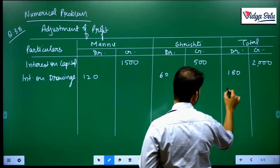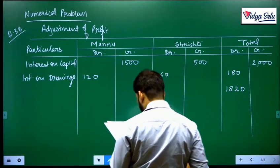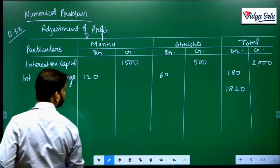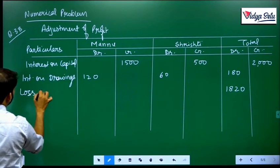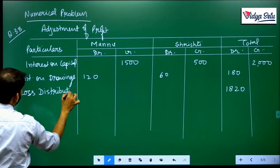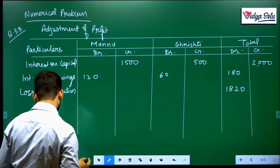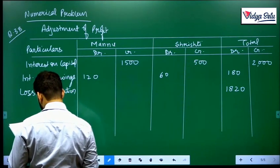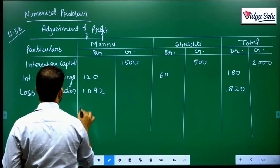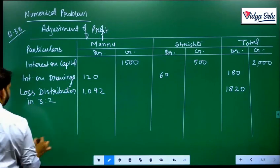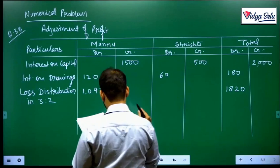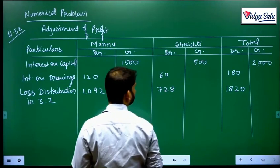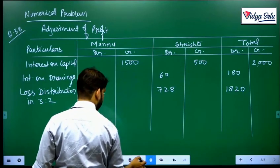The firm is giving 2,000, firm is taking 180, so the difference comes to 1,820. And this difference of 1,820 will be distributed in the 3 to 2 ratio. So loss distribution will be in 3 to 2, which means 3 parts and 2 parts out of 5 total parts.